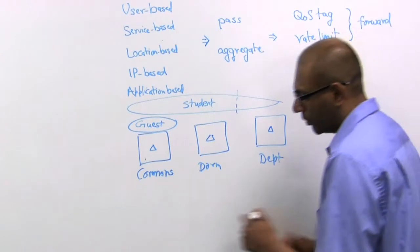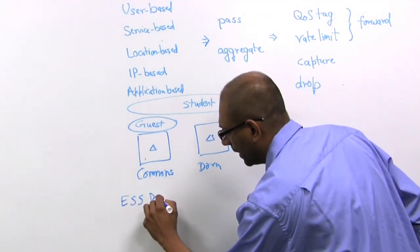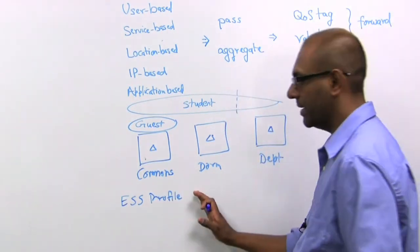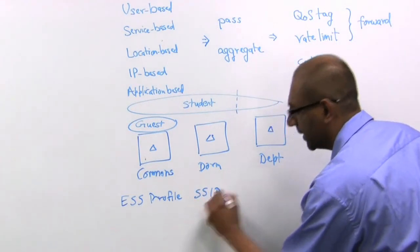So in Meru, you can set up something called an ESS profile. And associated with an ESS profile, you have at least four parameters. The first one is the advertised SSID.